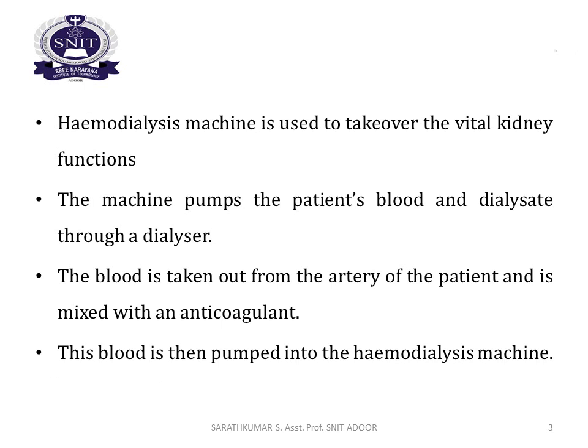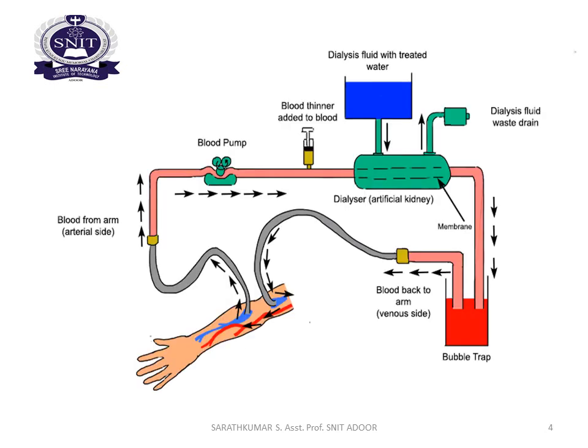The hemodialysis machine pumps the patient's blood and dialyzes it through a dialyzer. The blood is taken out from the artery of the patient and is mixed with an anti-coagulant. This blood is then pumped into the hemodialysis machine. This is the hemodialysis mechanism diagram. The dialyzer has a blood pump connected to the artery.